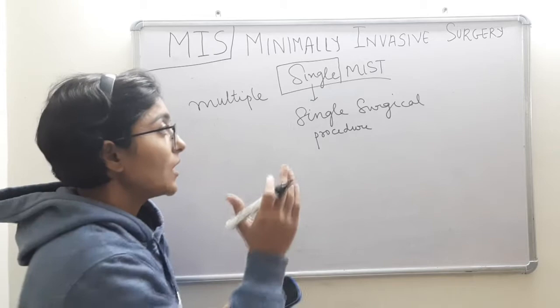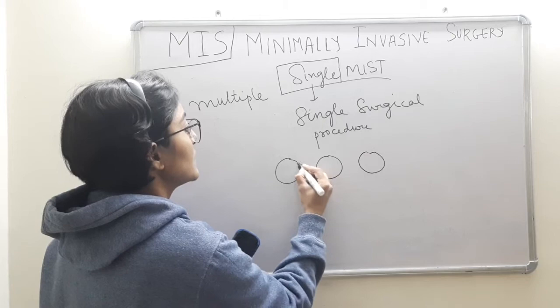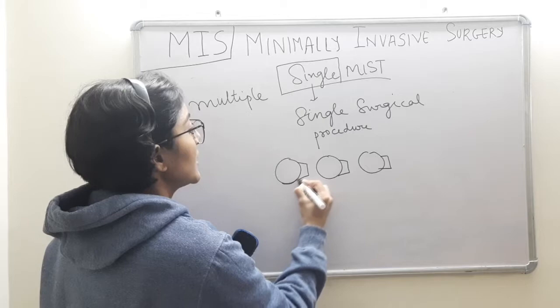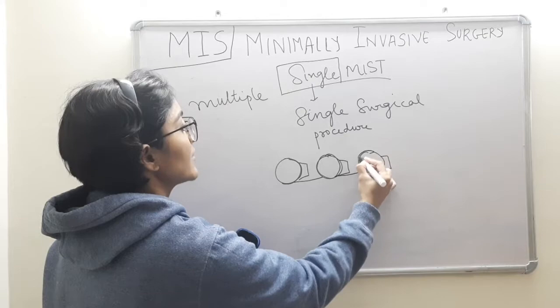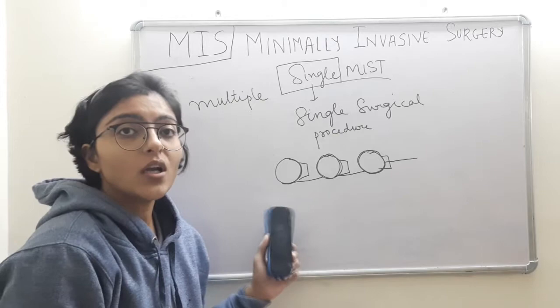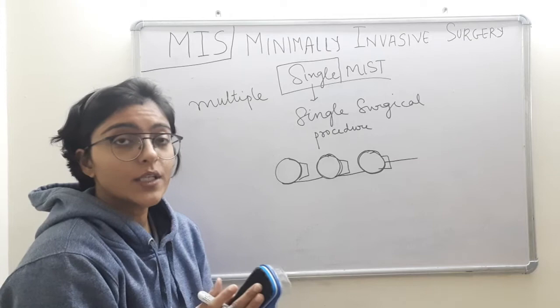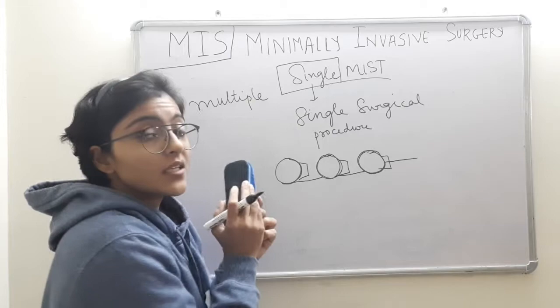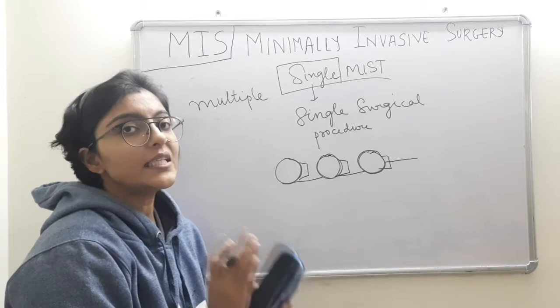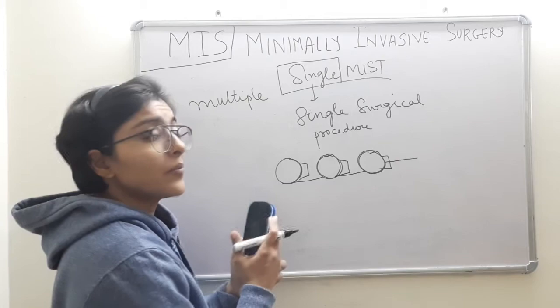It shouldn't be like one defect is in one quadrant and the other one in another quadrant, connected via a single MIST incision. Ideally, they have to be located adjacent to each other, so that with the Single MIST approach, these multiple defects are accessed and treated in a single surgical procedure. That is why the term 'Single MIST.' Single MIST is not related to single flap approach; rather, the word 'single' refers to multiple defects treated in a single surgical procedure.